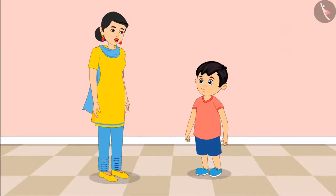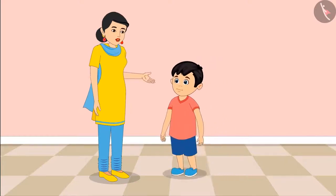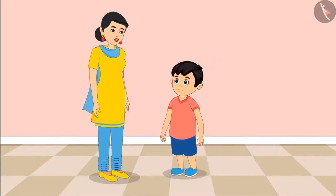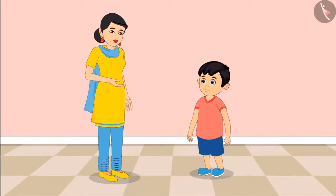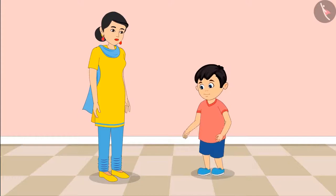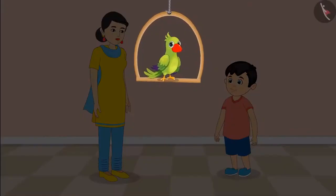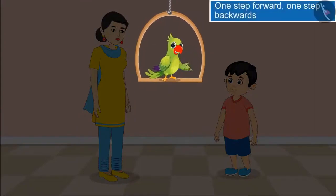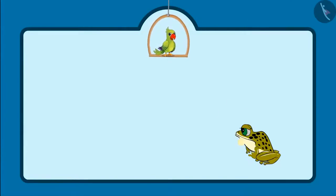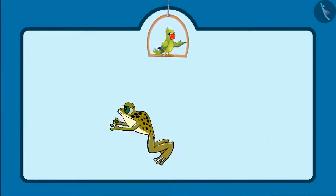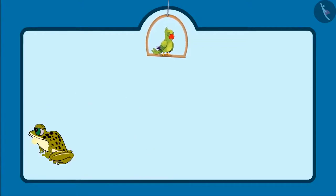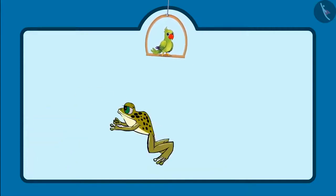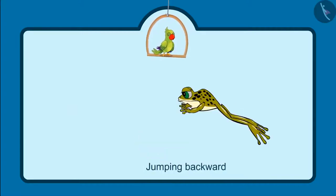Now can you jump a step forward from the place you are standing right now? Yes, mom. Wow Jhotu, and now jump a step backwards. Kids, did you see how Jhotu jumped a step forward and then backwards? Can you tell whether this frog is jumping forward or jumping backwards? You are absolutely right. This frog is jumping forward, and this is called jumping backwards.